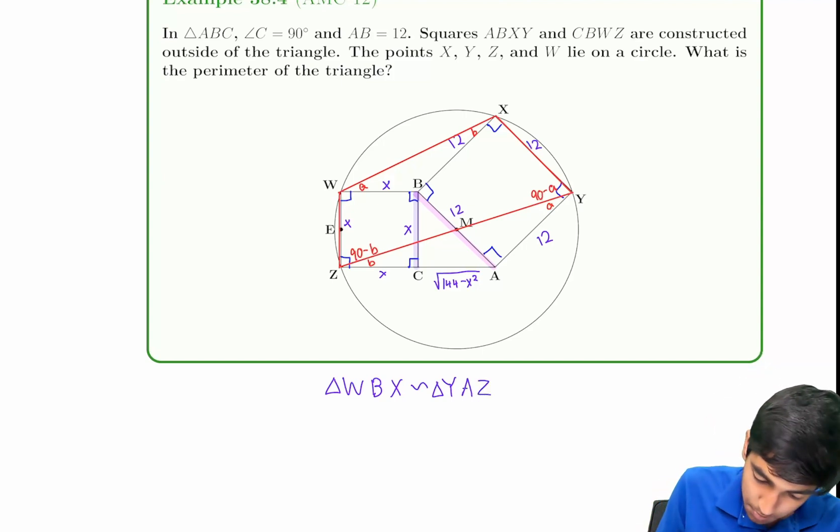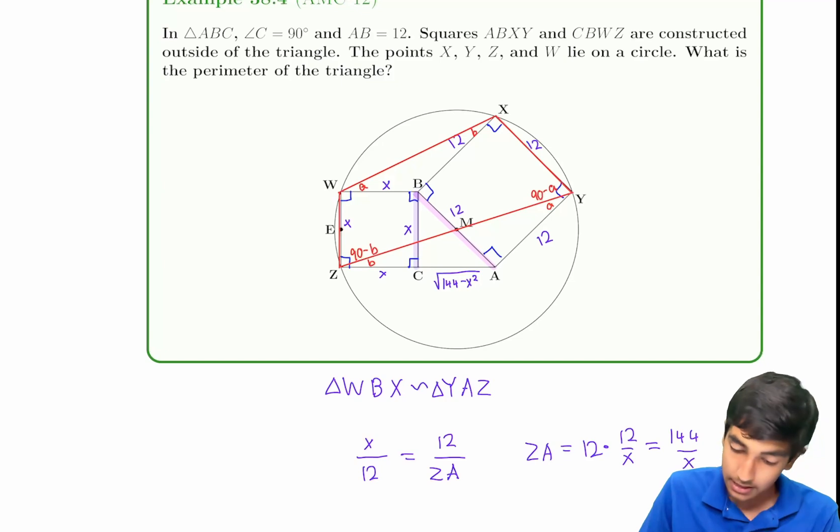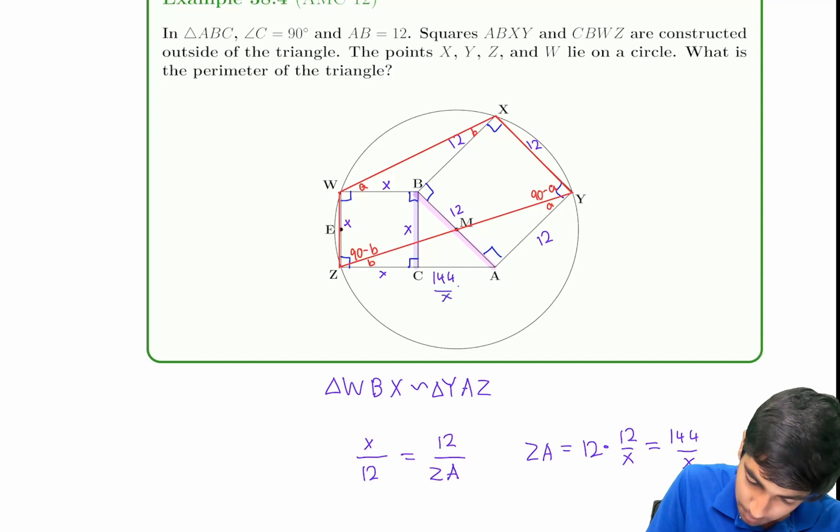We have WB, which is X, over BX, which is 12, and that's equal to YA, which is 12, over ZA. By solving, we get that ZA equals 12 times 12 over X, which is 144 over X. And that makes CA equal to 144 over X minus X.